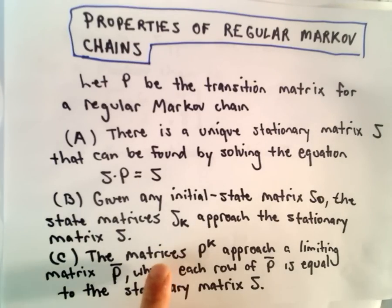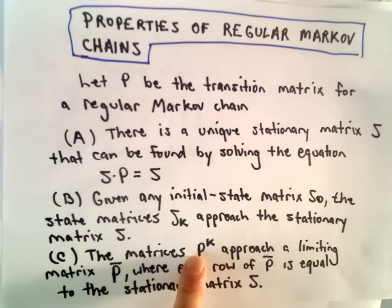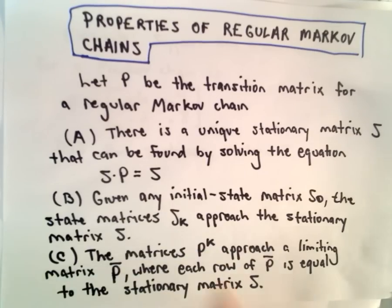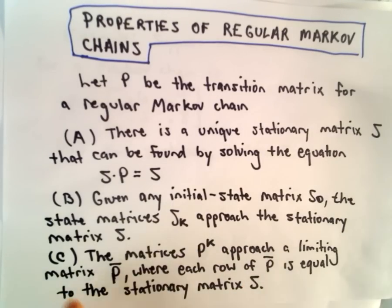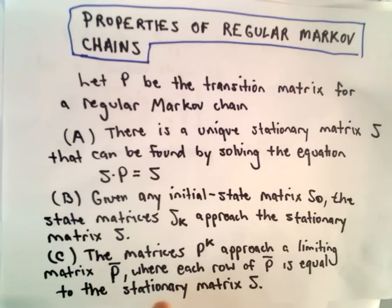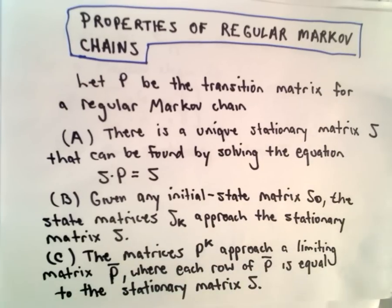One other property says if we look at powers P^K of our transition matrix, those are going to approach a limiting matrix P̄, where each row of P̄ is equal to the stationary matrix S.